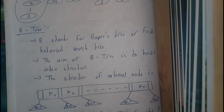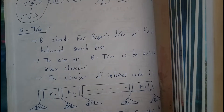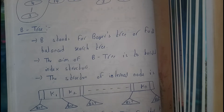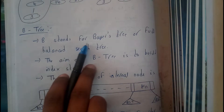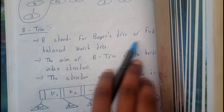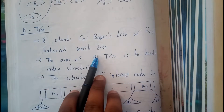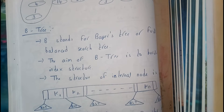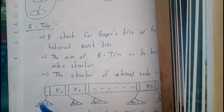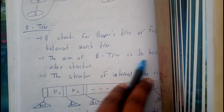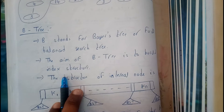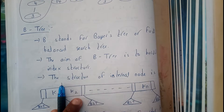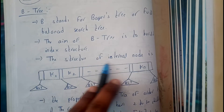Hello guys, we are back with our next tutorial. In this tutorial we are going to discuss all about B-tree. B stands for Bayer's tree, or fully balanced search tree. This is one of the best trees and the last topic of our trees. The aim of B-tree is to build the index structure, which is a really simple topic.